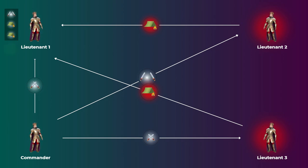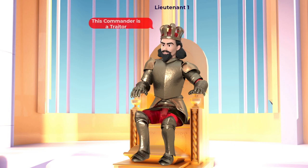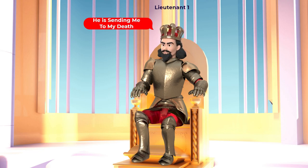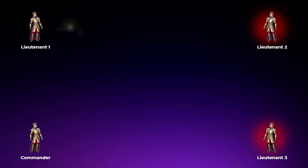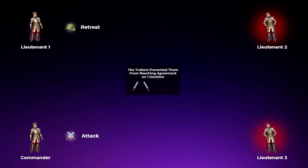From the perspective of lieutenant one, he got two retreat messages and one attack message from the commander. The problem here is that he doesn't know who the traitors are, so he will think that the commander is a traitor and is sending him to his death alone. So he will take the majority vote and retreat. The commander, on the other hand, also doesn't know who the traitors are and what they are doing, so he will do what he told the lieutenants to do and attack alone. In this situation, the loyal lieutenant retreated alone and the loyal commander attacked alone, so the two traitors actually succeeded in preventing them from reaching agreement on one decision.